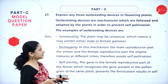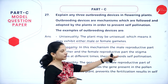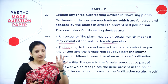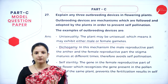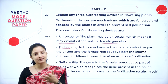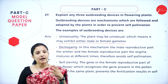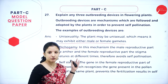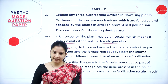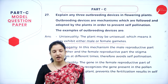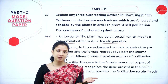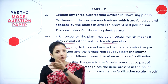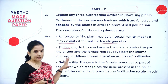The second device is dichogamy. In this mechanism, the male reproductive part (anther) and the female reproductive part (stigma) mature at different times. In a bisexual flower, if the anther produces pollen and the stigma matures at the same time, pollen grains fall on the stigma causing self-pollination. By choosing plants exhibiting dichogamy, when anthers burst and release pollen grains, the stigma is not yet mature to receive them, so cross-pollination occurs with another flower.